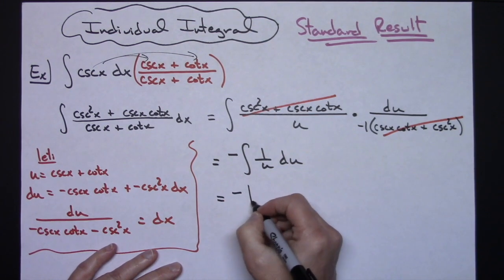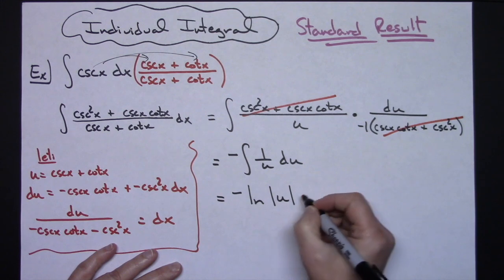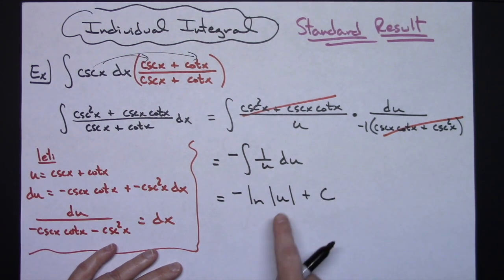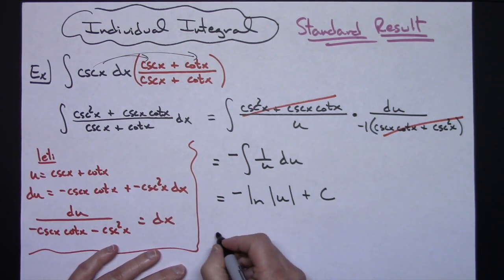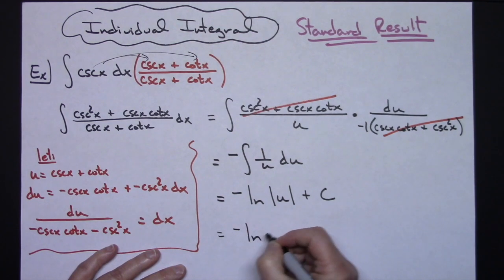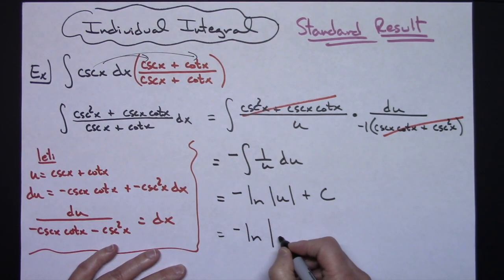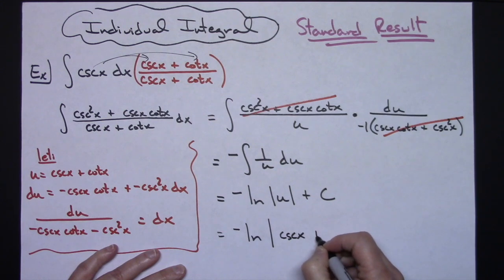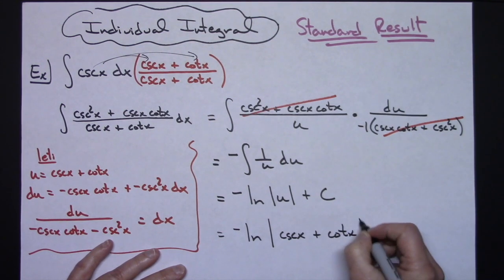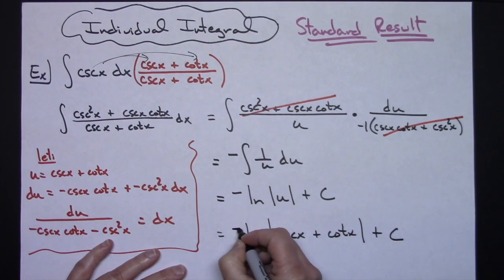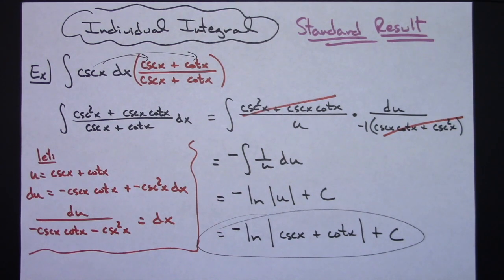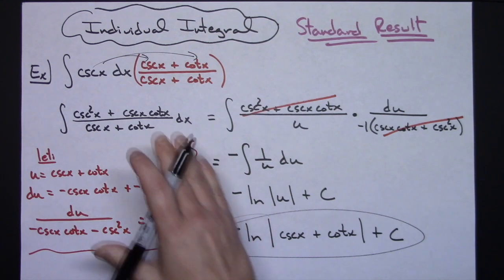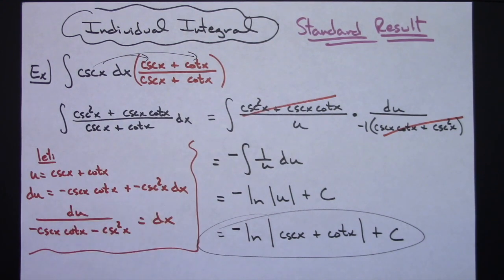After crossing out the numerator and denominator and pulling the negative out in front, we have negative the integral of 1 over u du, which integrates to negative natural log of the absolute value of u plus c. Replacing u gives us negative natural log of the absolute value of cosecant x plus cotangent x plus c — your standard result. As long as you know this trick it turns out to be a nice little u substitution; otherwise you just have to memorize the integral of cosecant x.